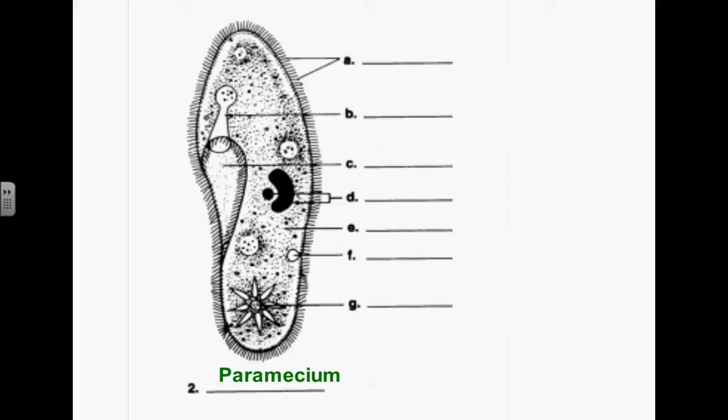So this is a paramecium. Another group of protists. It moves around using these things, these little tiny hairs all around the outside. Does anybody remember what we call those? Tiny little hairs? Yeah, but they have another name. Cilia. Cilia. Cilia. It's okay. Cilia. They paddle it through the water.